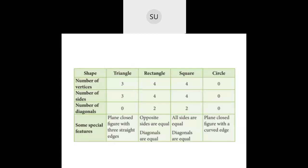Then we learned the different shapes. We have triangles — a triangle has three vertices, three sides, and no diagonals. It is a plane closed figure with three straight edges. Then a rectangle has four vertices, four sides, and two diagonals. In a rectangle, opposite sides are equal and the diagonals are also equal — it has a length and a breadth, both pairs equal.